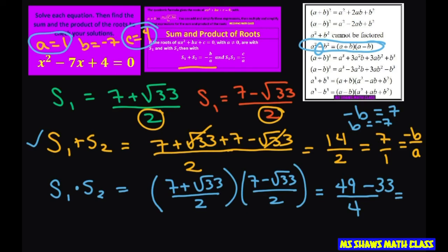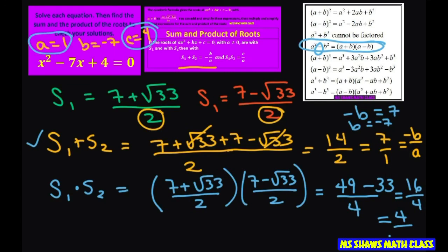49 minus 33 is 16, divided by 4, so that equals 4. You can put that over 1, so that's 4 / 1, which is the same as c / a. So we did get c =